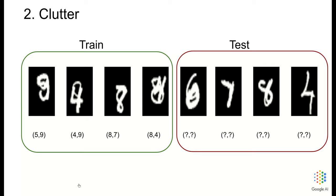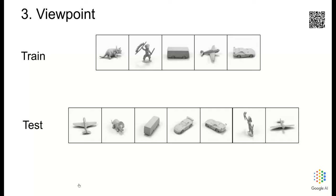The third challenge is viewpoint. The third computer challenge that we consider is generalizing to new viewpoints of the same objects. Suppose we want to classify objects. At training time, we only get front view of the objects. But at test time, the image can be from any viewpoint. Capsule networks can also help us to generalize to new viewpoints.